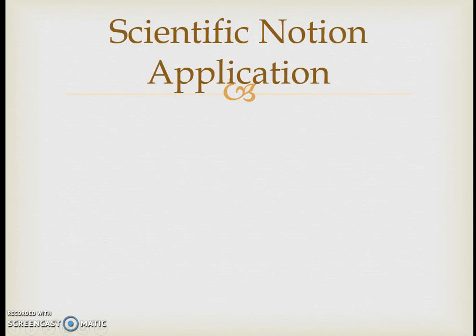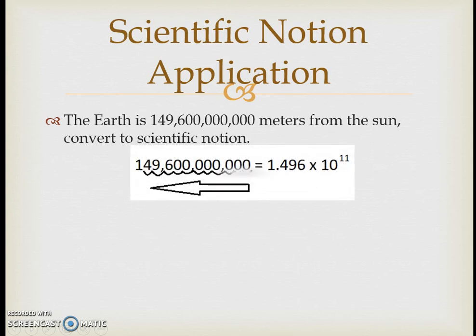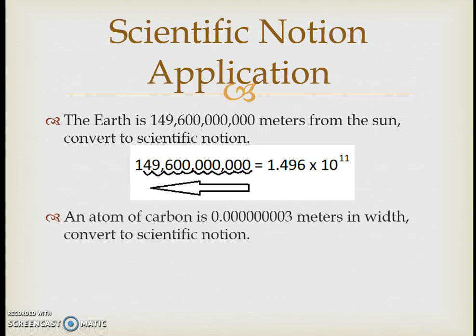Scientific notation eliminates a lot of the zeros and shrinks a number down to a coefficient between one and less than ten — one non-zero digit to the left of the decimal — and then some power of 10 representing how many times the decimal point had to be moved. For example, the Earth is 149 billion 600 million meters from the sun, which we convert to 1.496 times 10 to the 11 meters.